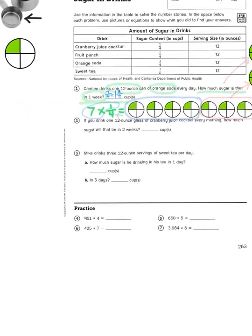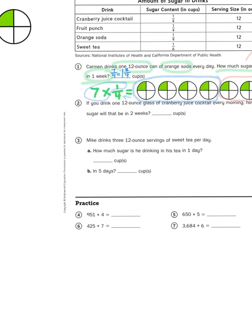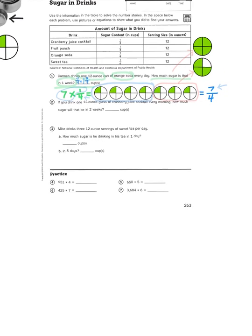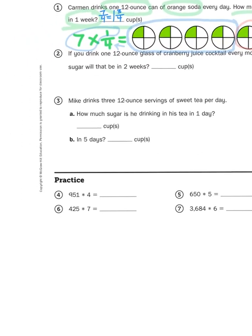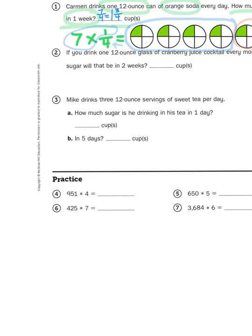I'll let you guys try problem two and three on your own because, again, you're just applying the same formula. So if you drank a glass of cranberry juice every morning, what would be your total over two weeks? Well, if there's seven days in one week, you would just be multiplying one-fourth times fourteen.